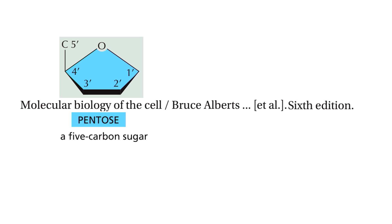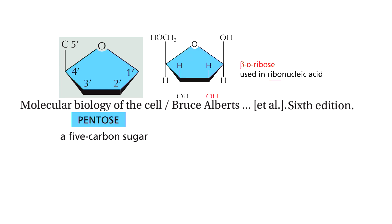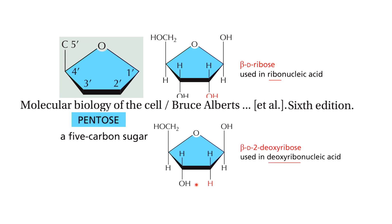Nucleic acids have two kinds of pentose sugars — the sugars which have five carbon atoms. The recurring deoxyribonucleotide unit of DNA contains 2'-deoxy-D-ribose, and ribonucleotide units of RNA contain D-ribose. The sugar is called 2-deoxyribose because there is no hydroxyl at position 2, just two hydrogens — so the hydrogen replaces the OH group.